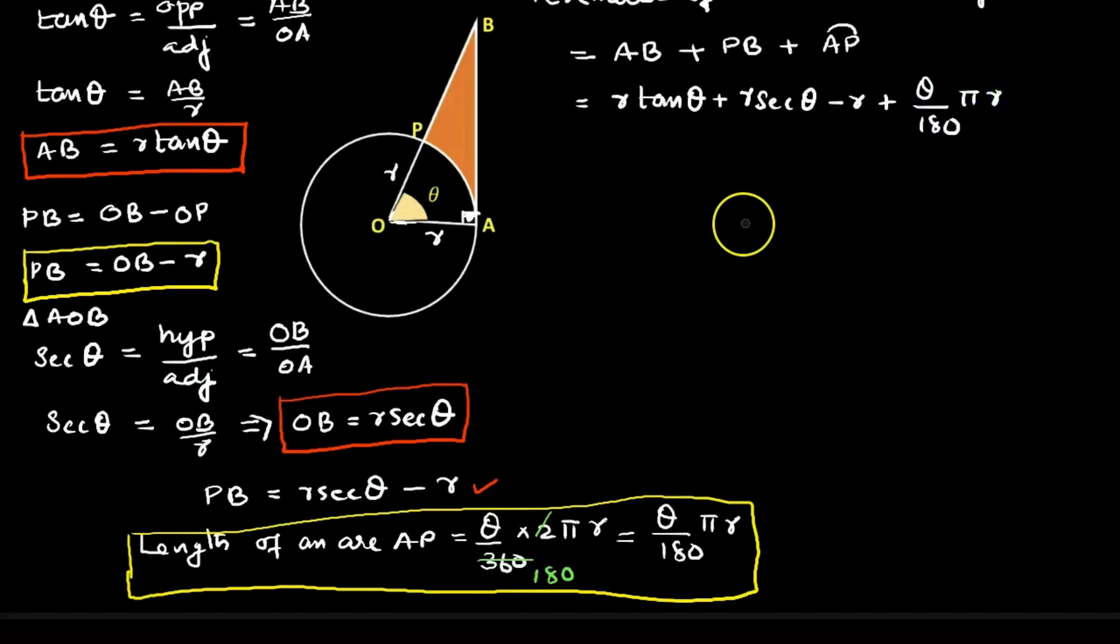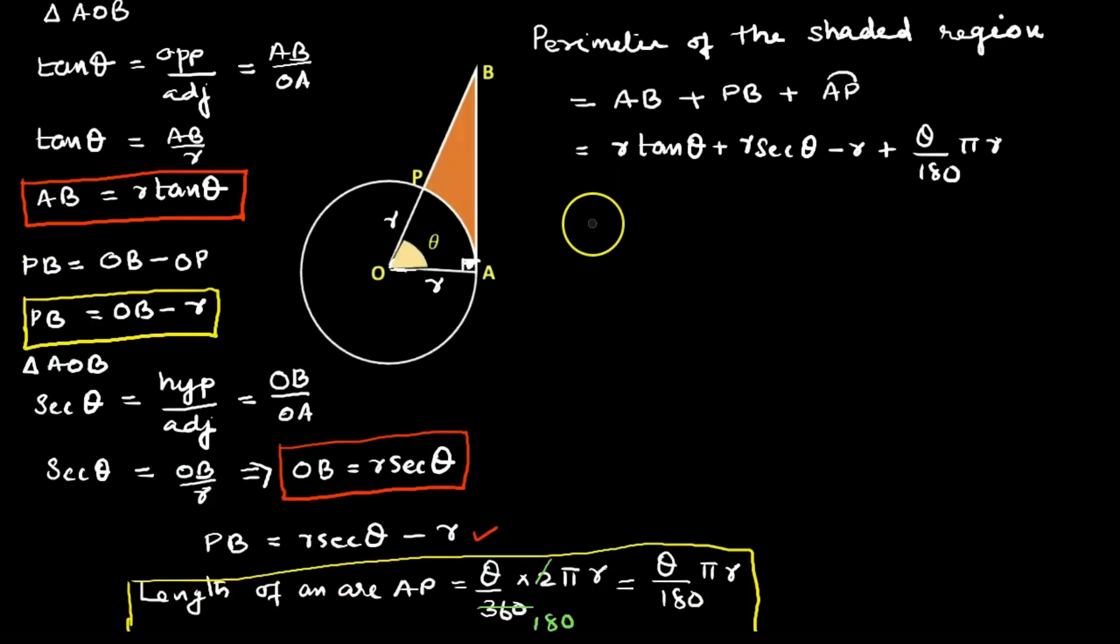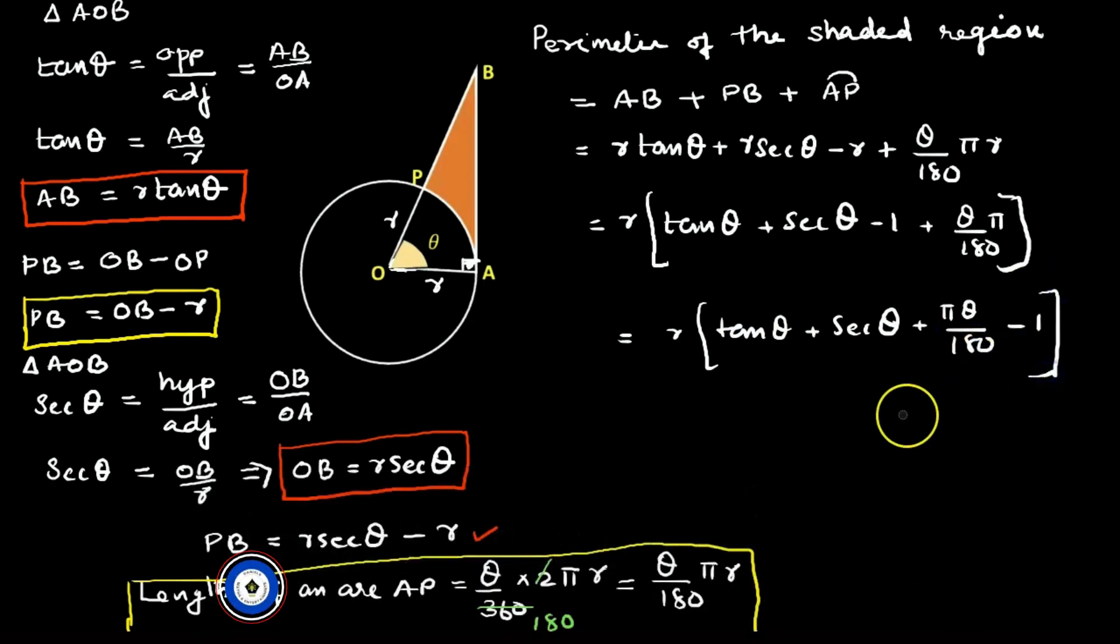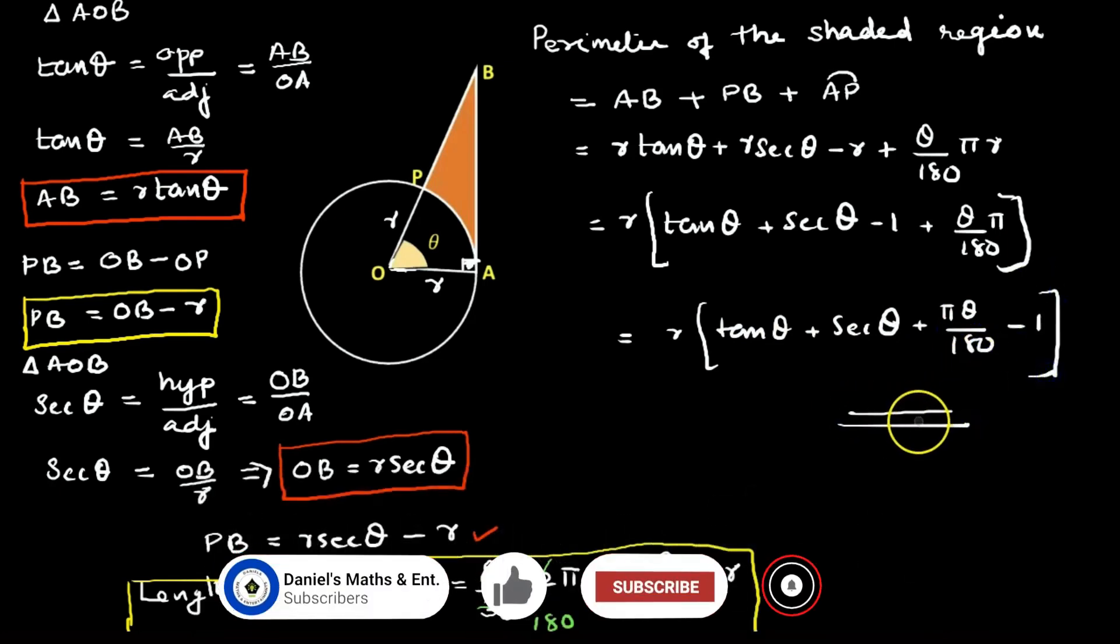Now let's substitute θ/180 πr. All terms contain r, so r we can take as common: r(tan θ + sec θ - 1 + πθ/180). Let's rearrange it: r(tan θ + sec θ + πθ/180 - 1). I hope it's clear, thanks for watching.